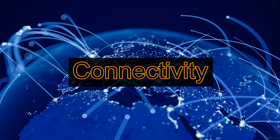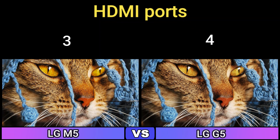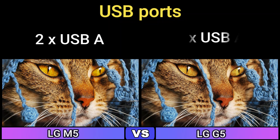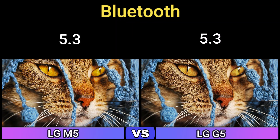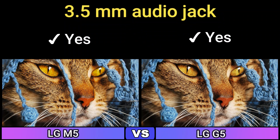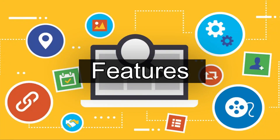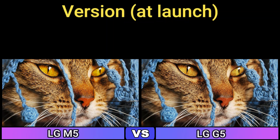HDMI version: HDMI 2.1. HDMI ports: 3 and 4. USB ports: 2x USB-A. Wi-Fi: Wi-Fi 6 (802.11ax). Bluetooth: 5.3. 3.5mm audio jack: yes. Next: features — TV platform webOS, version at launch: 25.